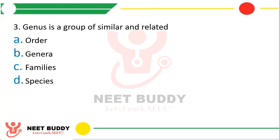Question thirteen: genus is a group of similar and related — option A, order; option B, genera; option C, families; or option D, species? The correct answer is option D, species.